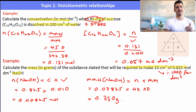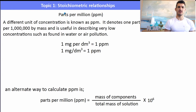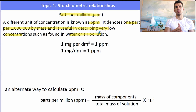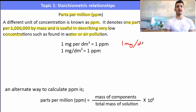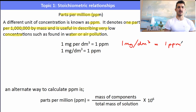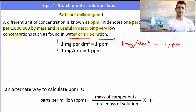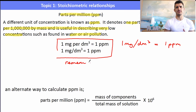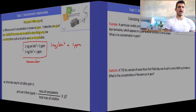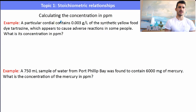Parts per million (ppm) is a different unit of concentration — one in a million — useful for describing concentrations in water or pollutants in air. Key conversions: 1 mg/dm³ = 1 ppm, and 1 mg/L = 1 ppm. Another formula: ppm = (mass of solute / total mass of solution) × 1,000,000. These conversions are not in the data booklet, so you must remember them.